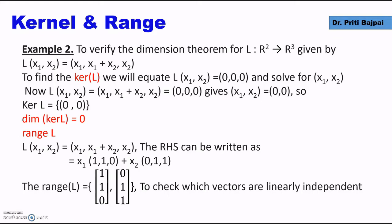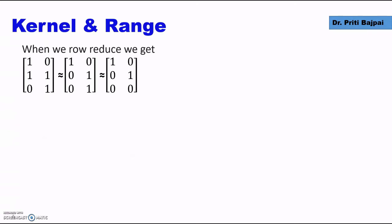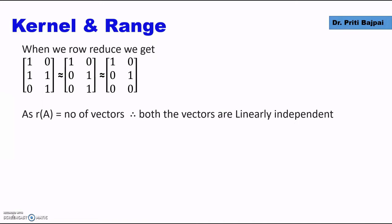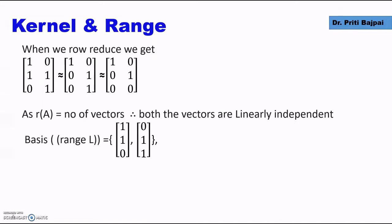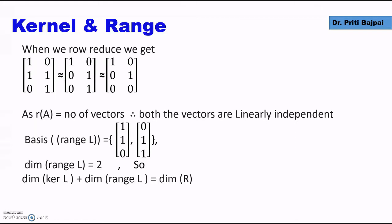Coming to the range of L. The image (x₁, x₁ + x₂, x₂) is made up of x₁(1, 1, 0) plus x₂(0, 1, 1). So there are two vectors. We check whether these two vectors are linearly independent. Writing them in a matrix and doing row echelon form, we find both vectors are linearly independent. The basis has the two vectors (1, 1, 0) and (0, 1, 1). Hence the dimension of range L is 2.